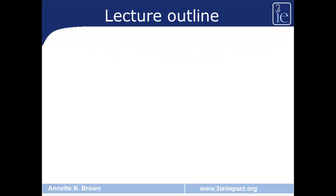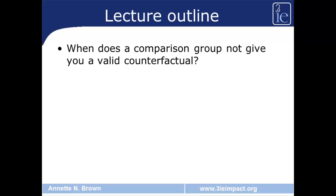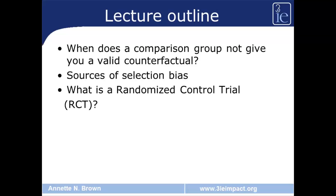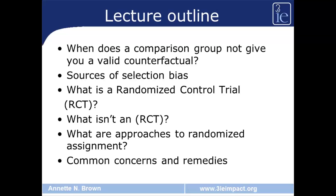In this lecture, I'm going to start by picking up where Howard White left off, where he talked about using the counterfactual in order to measure impact. We'll start by looking at when a comparison group does not give you a valid counterfactual, then talk about sources of selection bias, what an RCT is and is not, approaches to randomized assignment, and common concerns about RCTs and possible remedies.